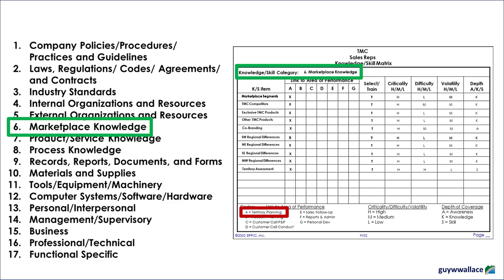In this example, we're looking at marketplace knowledge — category 6 — and linking it back to the area of performance A, territory planning. We can also identify whether the knowledge and skills necessary for performance are something we select for or leave for training. We can identify the criticality — high, medium, or low — the difficulty to learn, the volatility of that content, and to what depth we might need to take the instruction: performance guides and/or learning experiences, whether at an awareness level, a deeper knowledge level, or whether skills need to be practiced with feedback to develop performance competence.